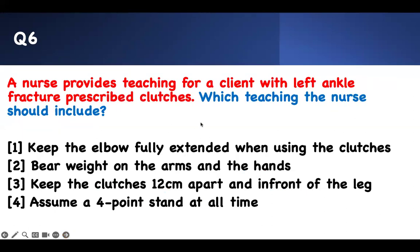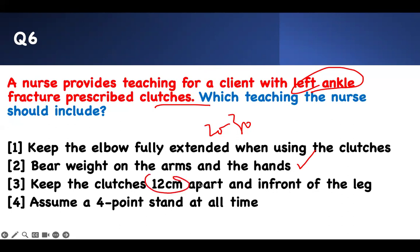Next question: which teaching will the nurse include? The nurse provides teaching for a client with a left ankle fracture prescribed crutches. Keep the elbow at 20 to 30 degrees — not fully extended. Bear weight on the arms and hands — that is correct. The crutches should be placed on the side, not 12 centimeters in front. Use a three-point stance, not four-point, because the ankle fracture is non-weight bearing. So the correct answer is to bear weight on your arms and hands.